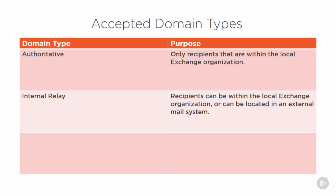Internal Relay Domains are those that the Exchange organization shares responsibility for. Some recipients for the domain will be located on an external mail system, which could be another Exchange organization or a third-party mail system. Exchange will first look for a local recipient, and if none are found, it will relay the mail off to another mail system. There's also a Send Connector needed to handle the routing of email messages to the other mail system, and we'll look at an example of that later when we examine shared namespace scenarios.